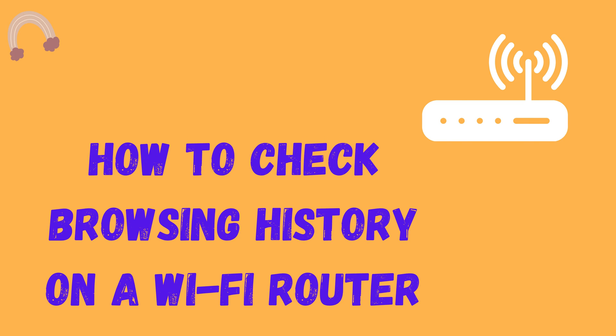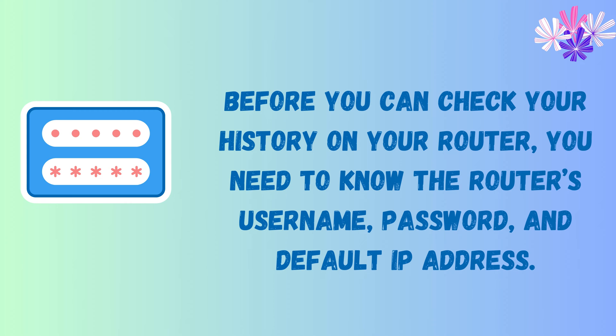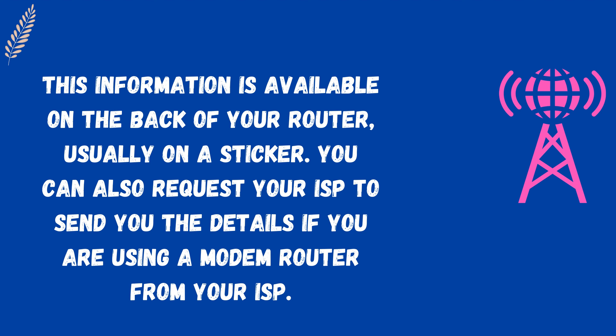Before you can check your history on your router, you need to know the router's username, password, and default IP address. This information is available on the back of your router, usually on a sticker. You can also request your ISP to send you the details. If you are using a modem router from your ISP, you might have changed the default username and password.